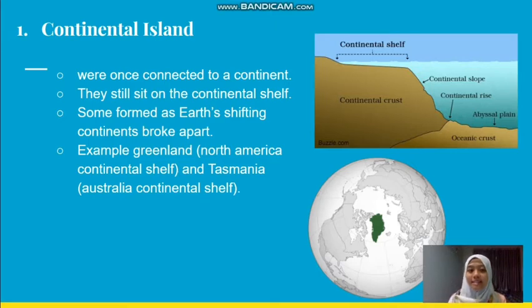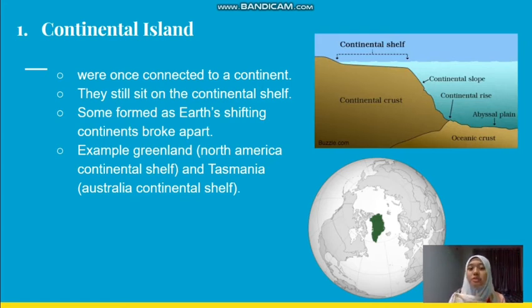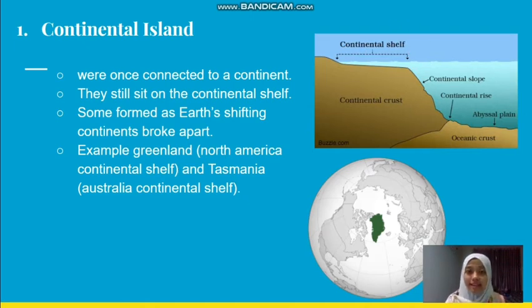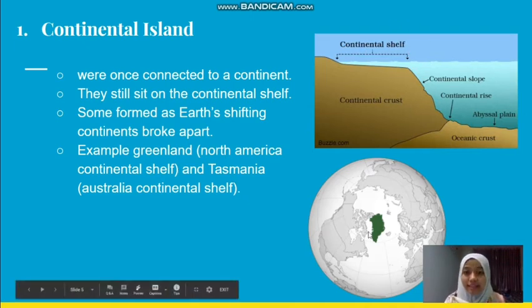A continental island is an island that used to be connected with the continents. But during the earth-shifting period, the continent broke apart. So one part remained a continent, and another part became the continental island — and it still sits on the continental shelf. An example of a continental island is Greenland.